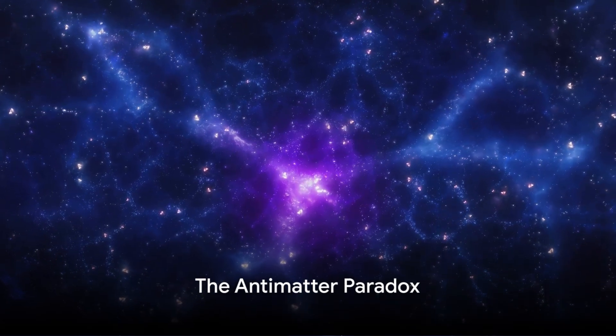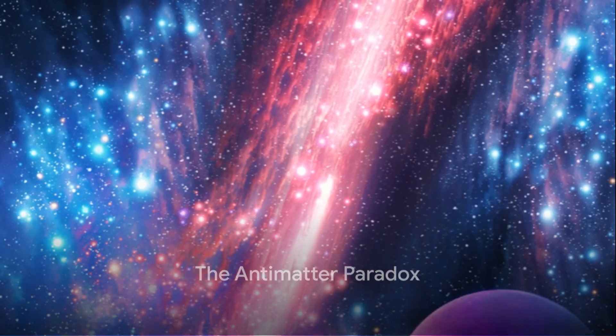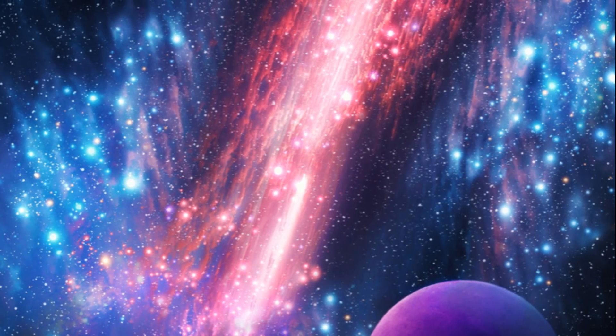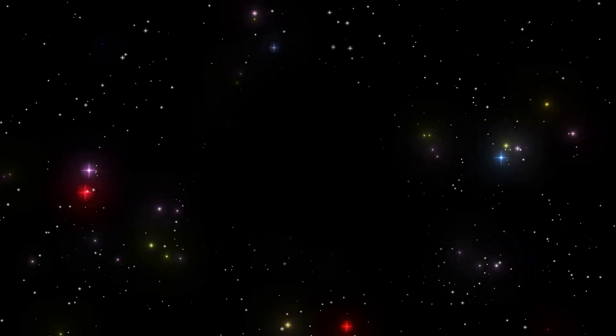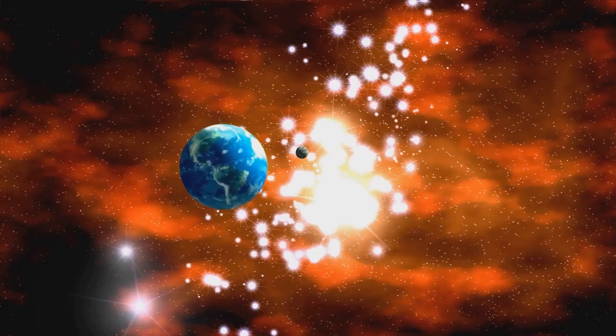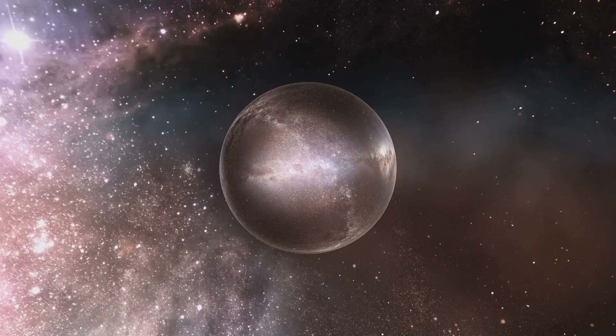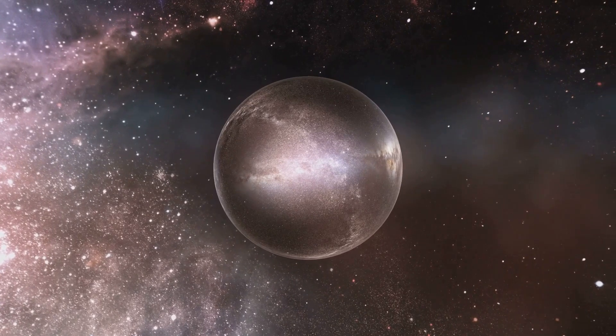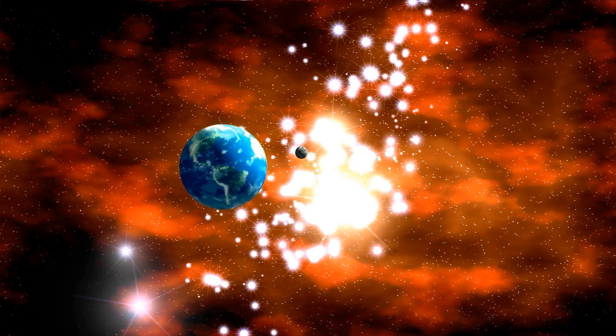Why does the universe favor matter over antimatter? This is not a trivial question and certainly not a matter of cosmic preference. It's a paradox that has puzzled scientists for decades. In our universe matter is abundant. It's in the stars, the planets, and even in us. Antimatter, on the other hand, is scarce, almost non-existent. But here's the thing: according to the laws of physics, for every particle of matter there should be a corresponding particle of antimatter. So why is there such an imbalance?